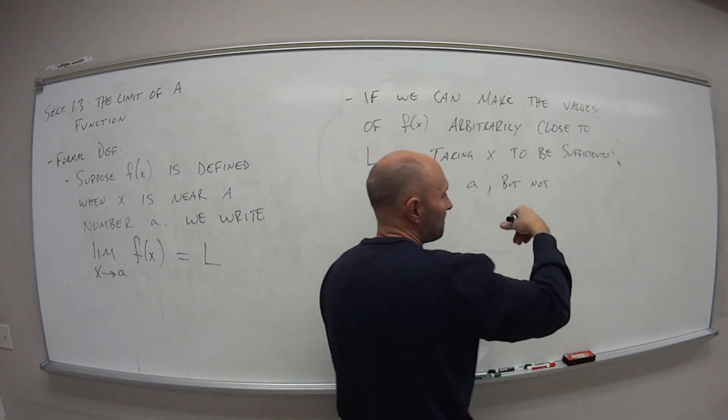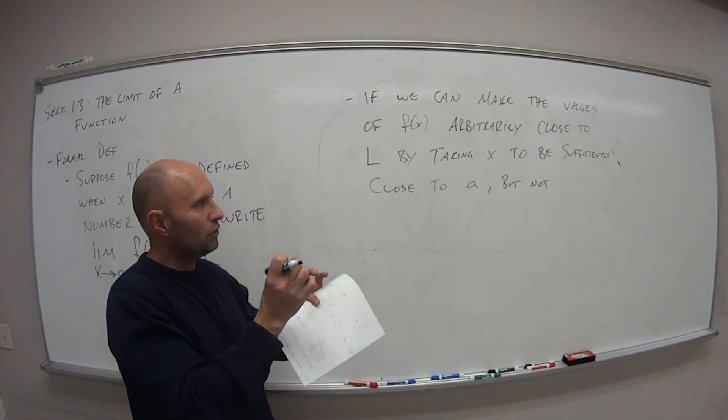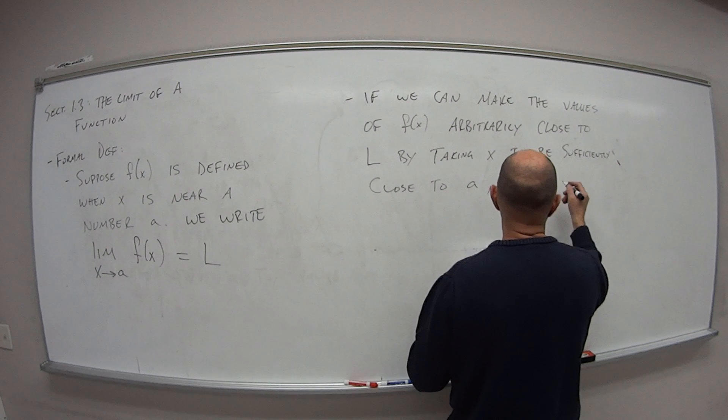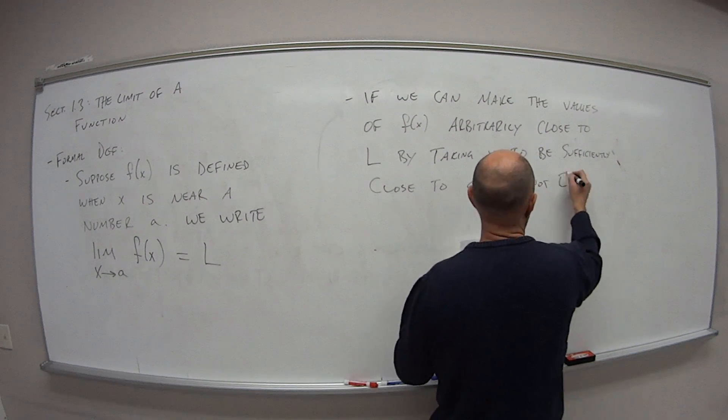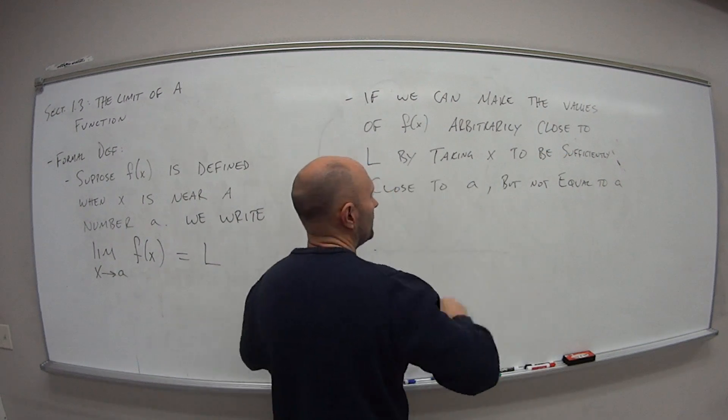So just as before, we're not taking that value of A and plugging it into the function. We're picking values very, very close to that value of A, but not equal to A. That's the important part here.